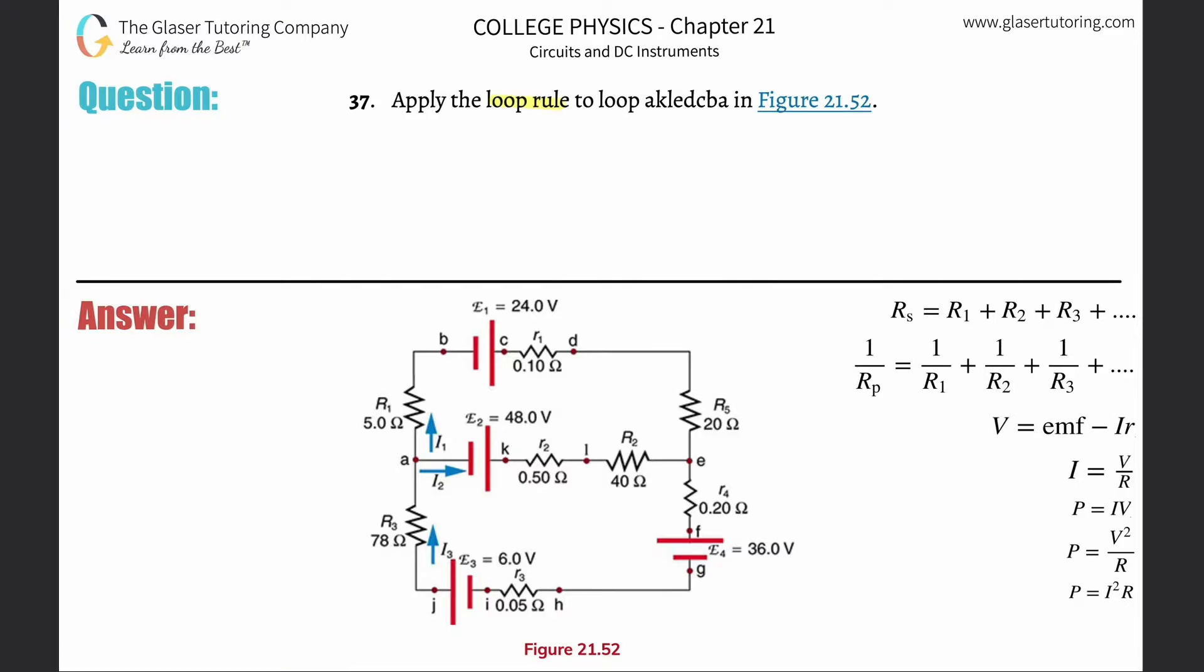Number 37. Apply the loop rule to loop AKLEDCBA in figure 21.52. Alright, so let's outline the loop.